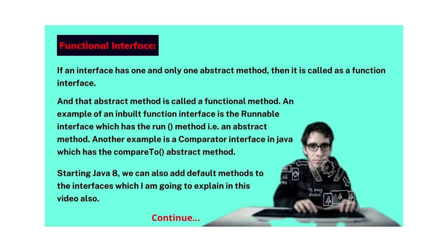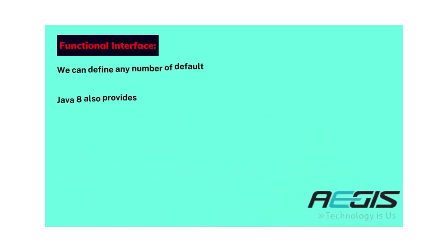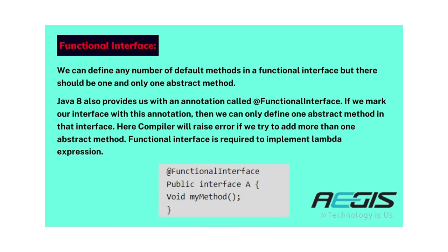If an interface has one and only one abstract method, then it is called a functional interface, and that abstract method is called a functional method. An example of an inbuilt functional interface is the Runnable interface, which has the run() method as its abstract method. Another example is the Comparator interface, which has the compareTo() abstract method. Starting Java 8, we can also add default methods to interfaces. We can define any number of default methods in a functional interface, but there should be one and only one abstract method. Java 8 also provides an annotation called @FunctionalInterface; if we mark our interface with this annotation, the compiler will raise an error if we try to add more than one abstract method. Functional interface is required to implement Lambda expression.